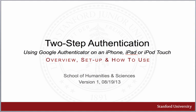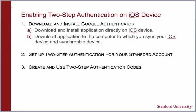Now let's take a look at how to enable two-step authentication using Google Authenticator, specifically for iOS devices such as iPhone, iPad, or iPod Touch. Enabling two-step authentication on your iOS device allows your smartphone to generate authentication codes using a mobile application without a network connection.